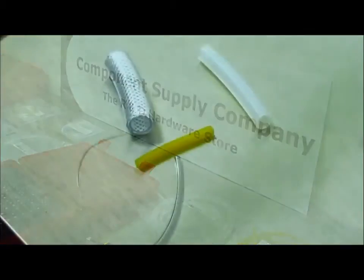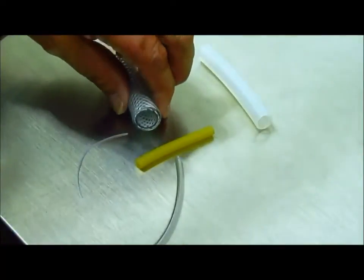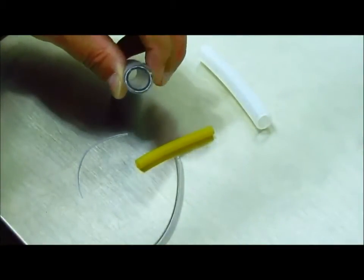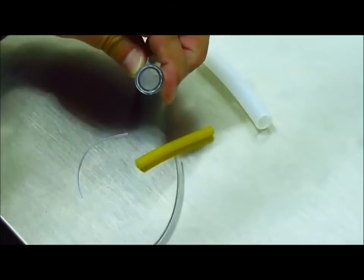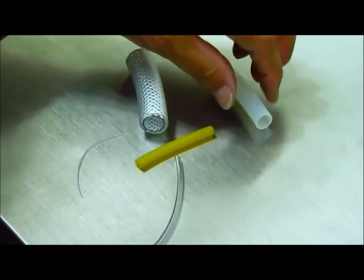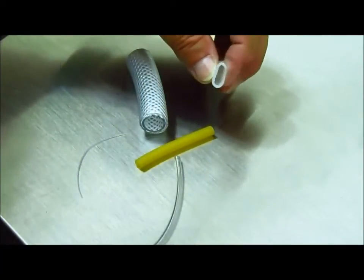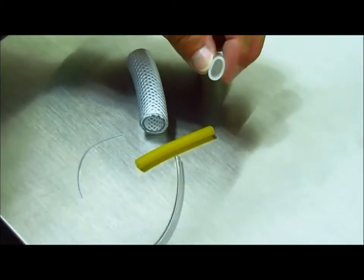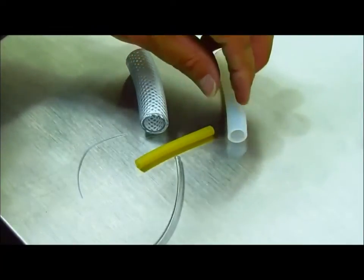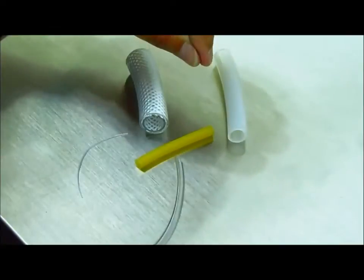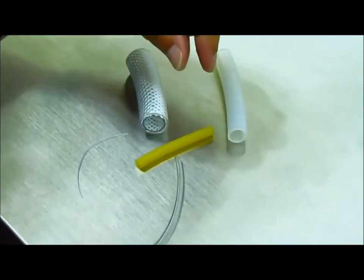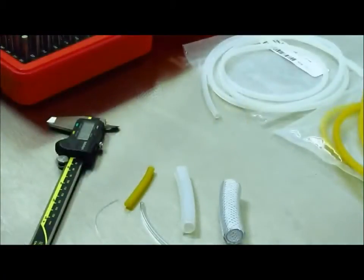Sometimes your project will call for a tube like this that's very rigid and fairly easy to measure. Other times it might be something like this silicone that's quite spongy, so the problem is how do you measure it without collapsing it? That's what we're going to look at today.